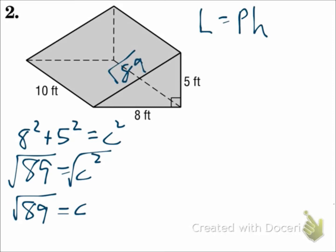So the square root of 89 will go right there. So for the perimeter, we'll do the square root of 89 plus 5 plus 8. And that's about 22.43. The height of the prism is the distance between the bases, which is 10.